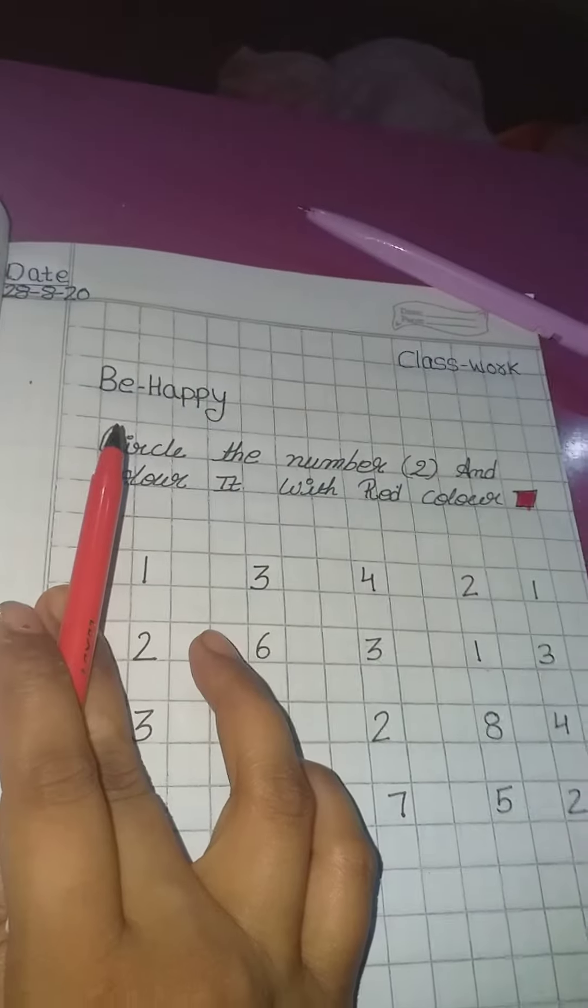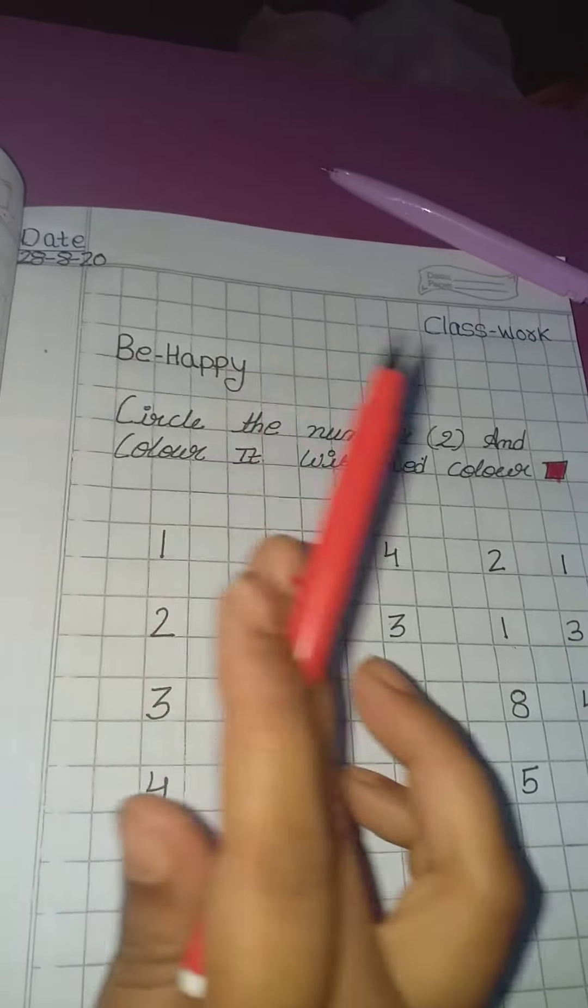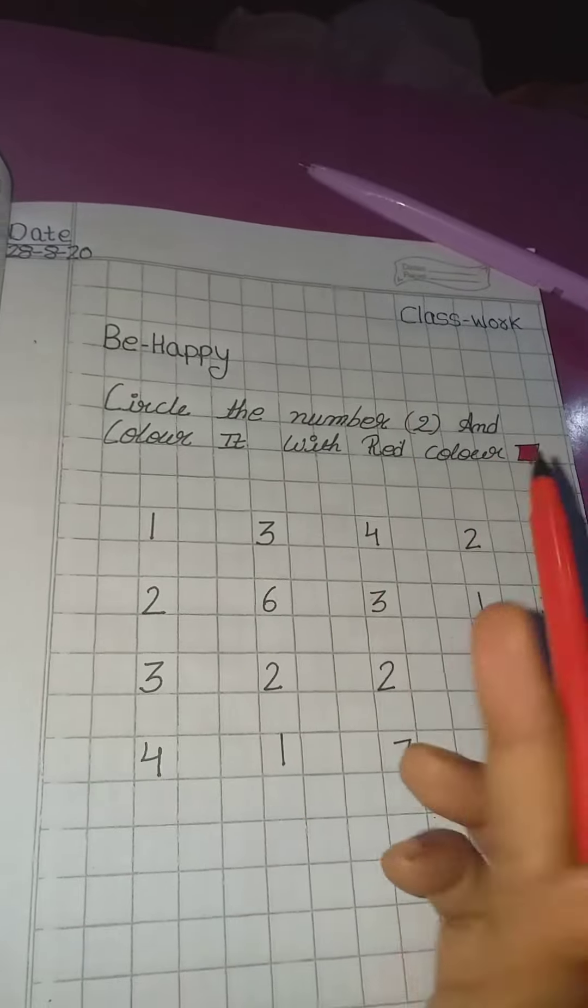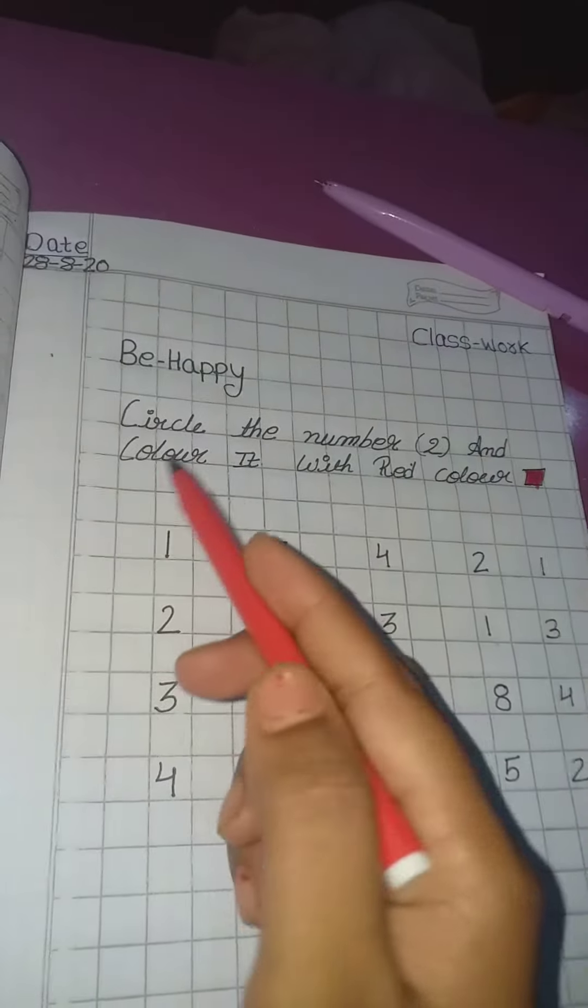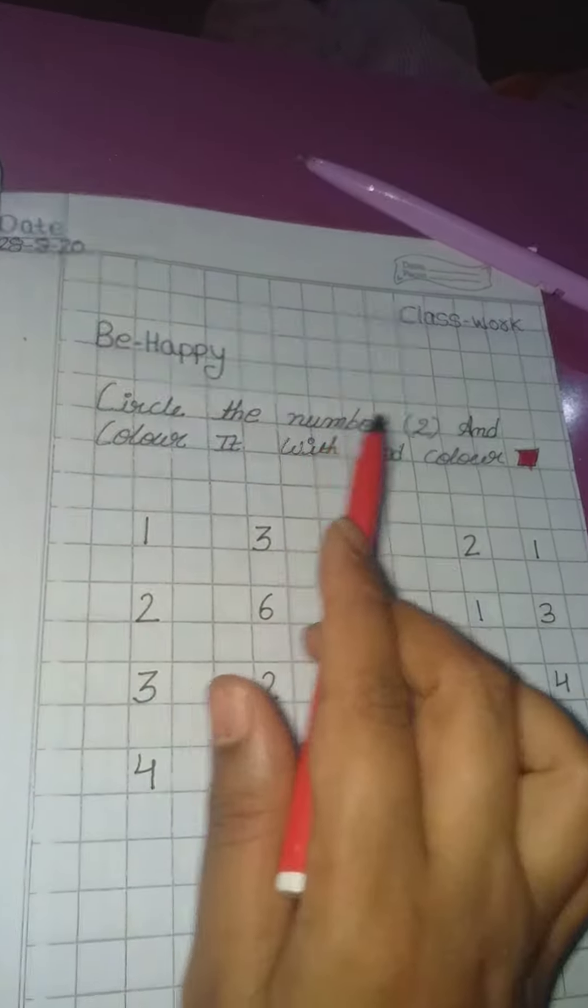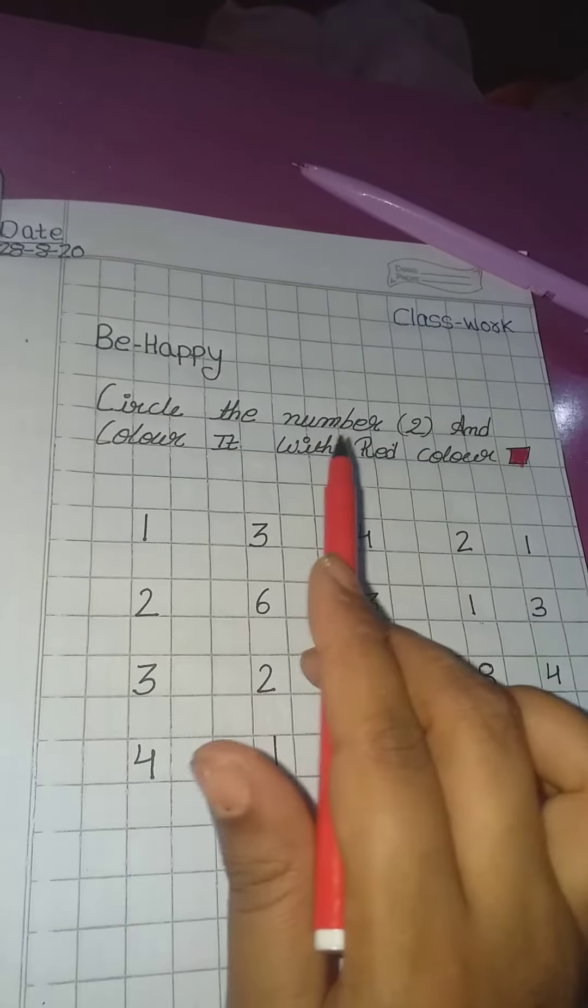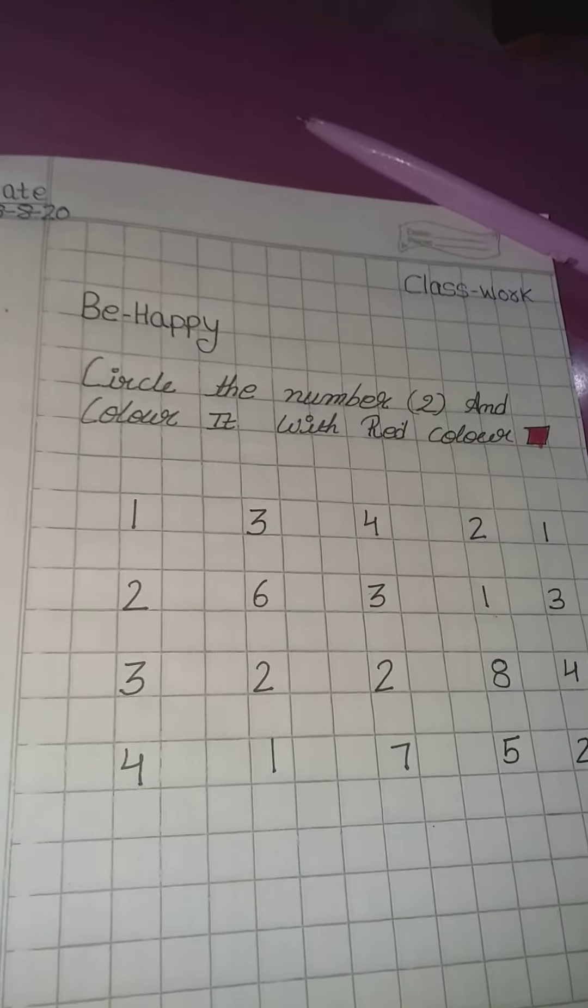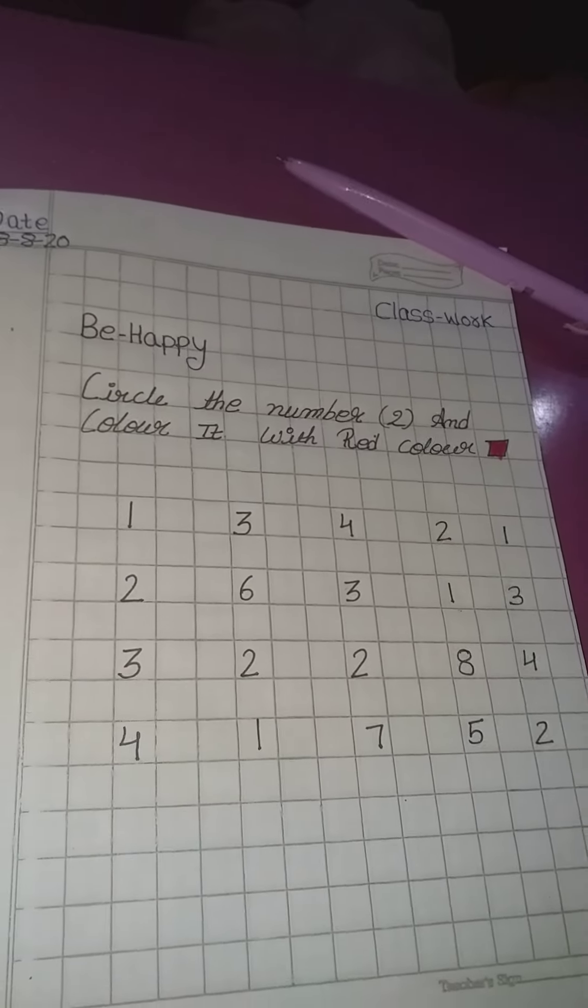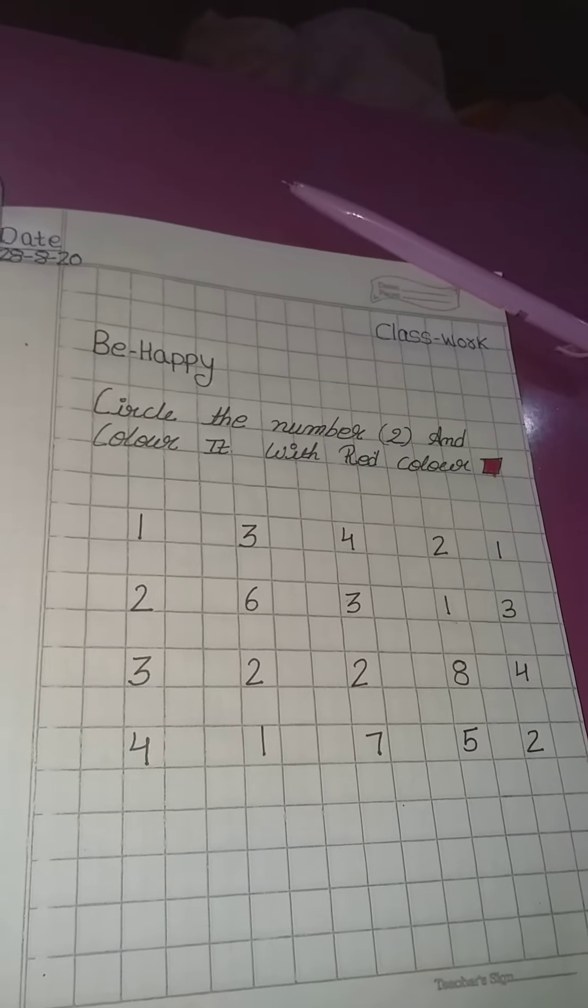After completed the classwork write a thought of the day. Today's thought is be happy. Then bita, aapko heading likhni hai. Circle the number 2 and color it with the red color. Aapko circle karna hai 2 number ko aur usay red color se color bhi karna hai.